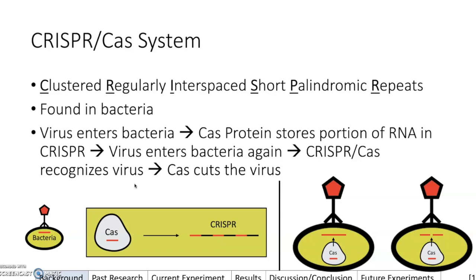The Cas protein takes a kind of screenshot or image of that virus. What it does is it takes some of that viral DNA and adds it to CRISPR — the Clustered Regularly Interspaced Short Palindromic Repeats — creating those repeated sequences separated by spacers. This is important because the next time the virus comes and inserts its DNA, the Cas protein can very quickly grab that piece from CRISPR, find the virus, and cut it to negate it.